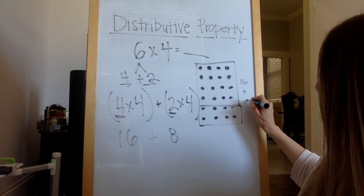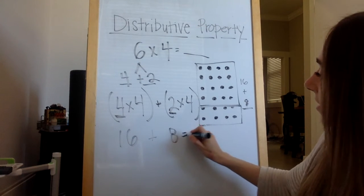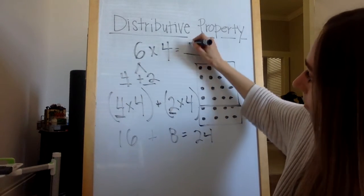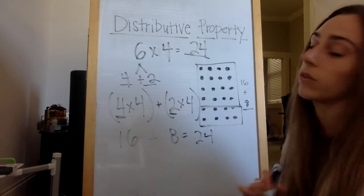I know that there's four, eight here. What's 16 plus eight? 24, which is the same as six times four, which is equal to 24.